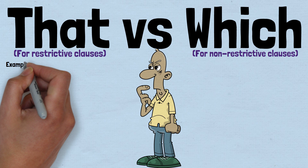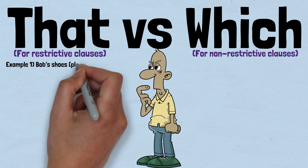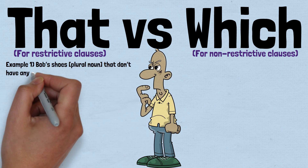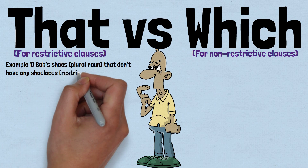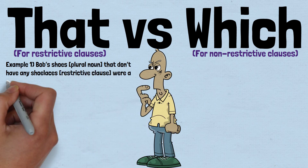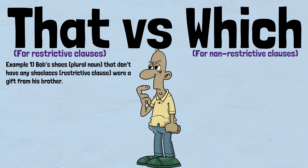Example 1: 'Bob's shoes that don't have any shoelaces were a gift from his brother.' In this example, we understand that Bob has multiple pairs of shoes, so it's important to distinguish the ones without shoelaces from the others. The word 'that' begins the process of distinguishing this pair of shoes from his other shoes with laces. Without it, we might assume that Bob only owns one pair of shoes — as in, 'Bob's shoes were a gift from his brother.'